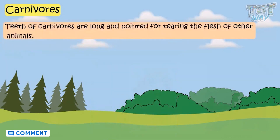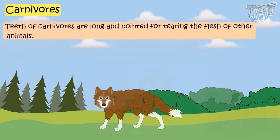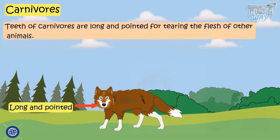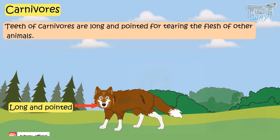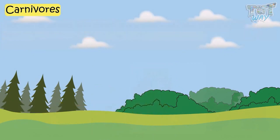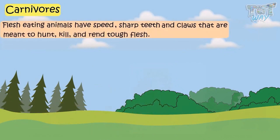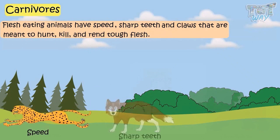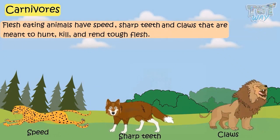Teeth of carnivores are long and pointed for tearing the flesh of other animals. Flesh-eating animals have speed, sharp teeth, and claws that are meant to hunt, kill, and rend tough flesh.